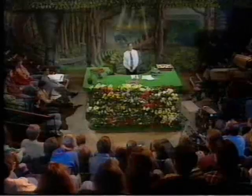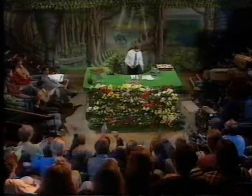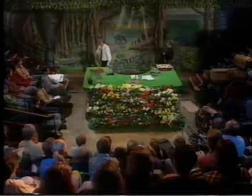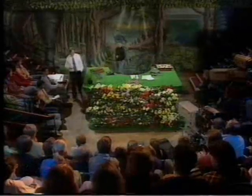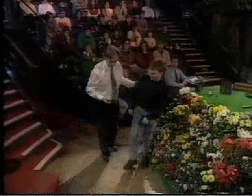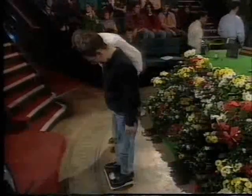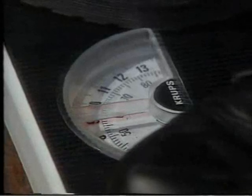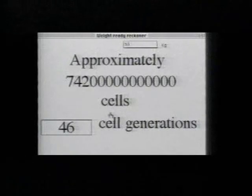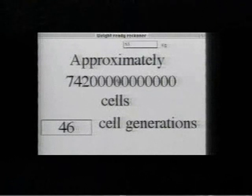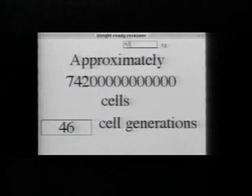Would anybody like to know how many cells they consist of? We've got a computer program which just converts weight into cells by rough calculation. What's your name? Sam. Would you like to stand on the scales, please, Sam? Those boots are going to weigh quite a lot on their own. Right, 53 kilograms. Sam has approximately 742 trillion cells.